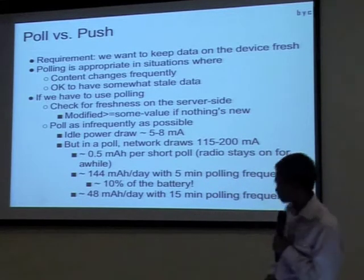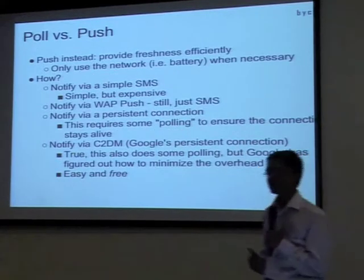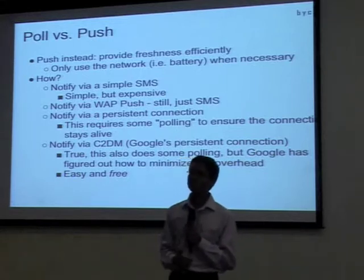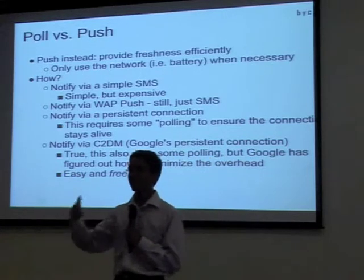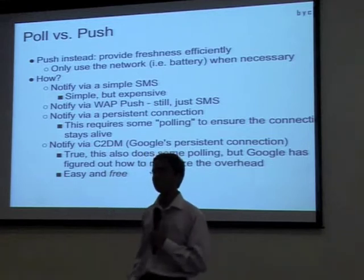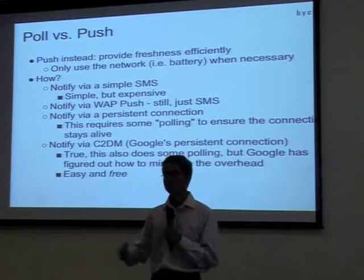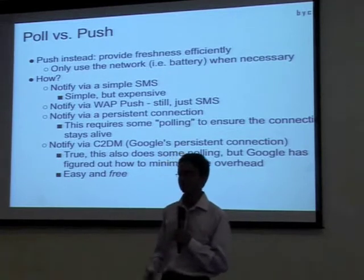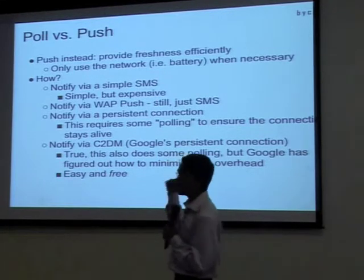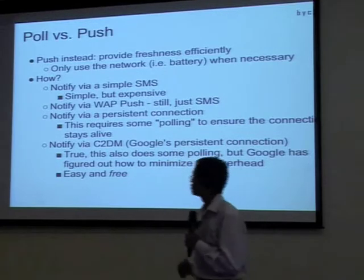If you poll every 15 minutes that is about 48 mA, and you do not want to do this because your user gets fed up and will uninstall your application. So instead of this, push can be thought of as an alternative, because we do not continuously know when to poll — the data on the server may or may not be updated.